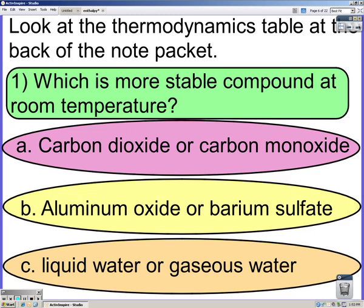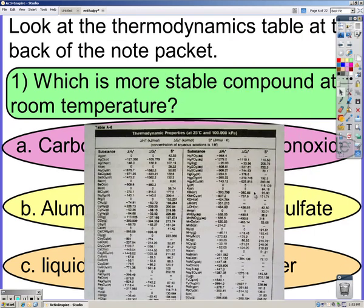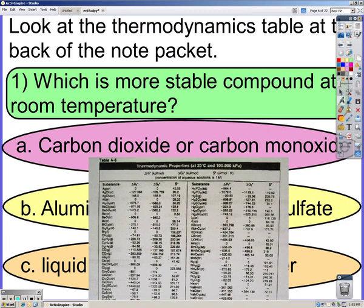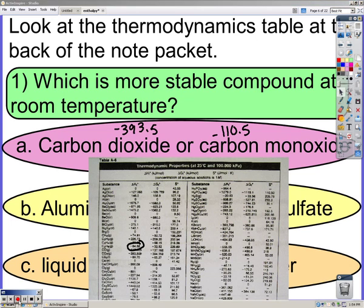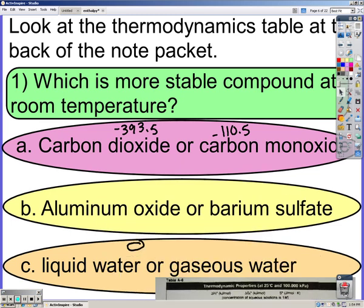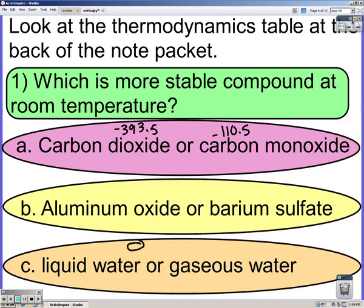Look at your note packet and figure out which of those is more stable. First, we find CO2 and locate its value: negative 393.5. Then we find carbon monoxide, which is right above that: negative 110.5. The more stable is the one that's more negative, so out of those two, carbon dioxide is more stable.